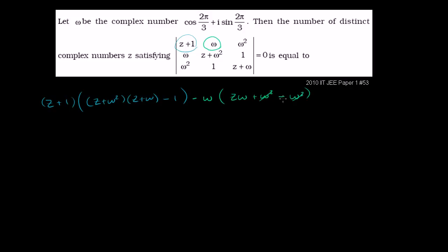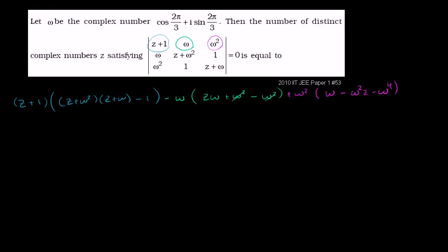Then we have to worry about the omega squared term. It's going to be plus omega squared times omega times 1 — omega times 1 is omega — minus omega squared times z plus omega. So minus omega squared·z minus omega to the fourth. This whole expression needs to equal 0.